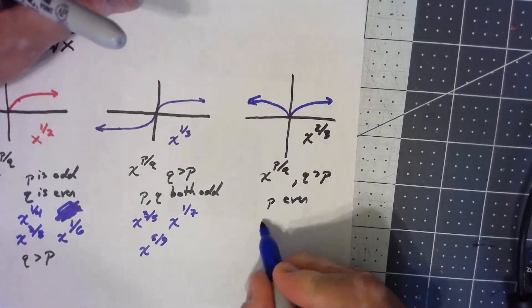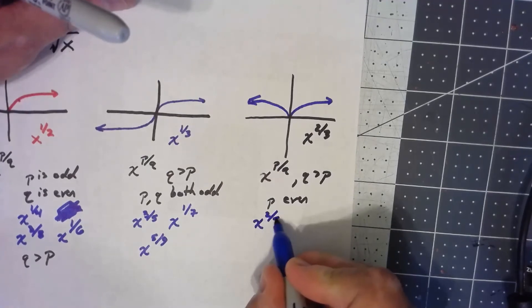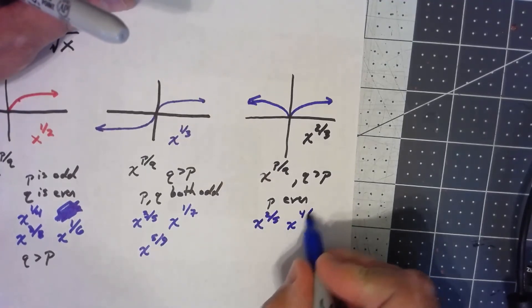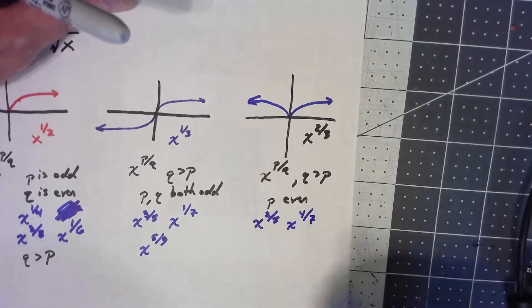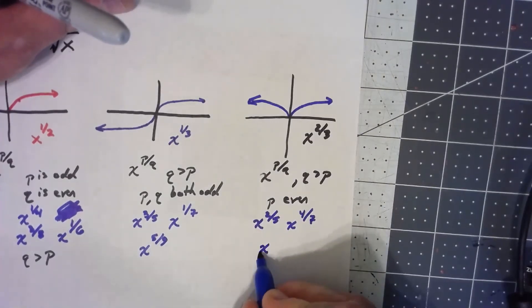So if we've got x to the 2/3, if I had x to the 2/5, if I had x to the 4/7, if I had x to the 2/6.